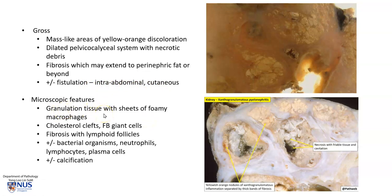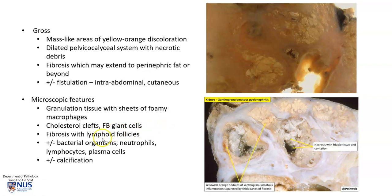Microscopically, there is granulation tissue accompanied by sheets of foamy macrophages, and this gives the yellow-orange color grossly. There are often cholesterol clefts, foreign body giant cells, and fibrosis, and this fibrosis may be accompanied by lymphoid follicles. Sometimes bacterial organisms, mixed inflammatory cells, and calcification can also be seen.